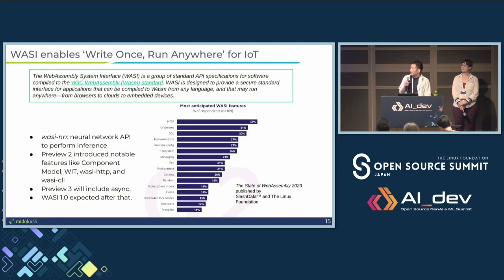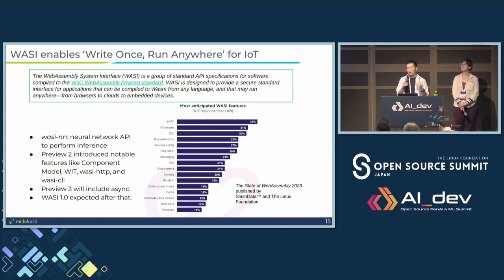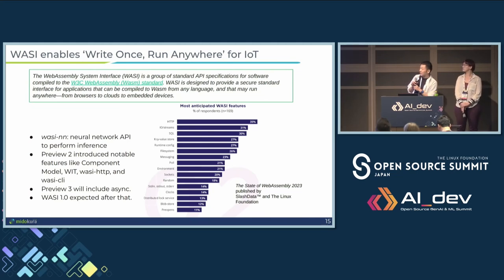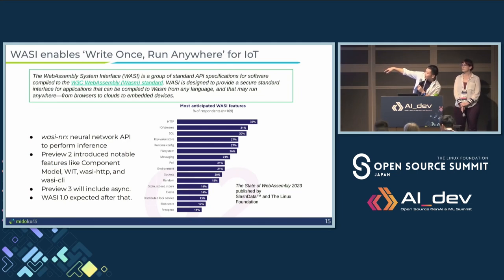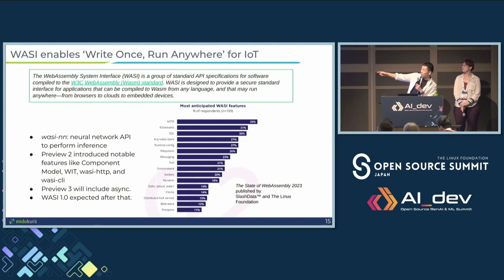There is a thing called WASI — WebAssembly System Interface — which is a set of standard interfaces for WebAssembly applications. It started off as a POSIX-like API for system clocks, files, and sockets, but now there are standard interfaces for things like WASI-NN, which is a neural network API for running inference, as well as HTTP, key-value store, and SQL — getting to quite high-level APIs. WASI-NN is particularly important for us because if you want to do edge AI, it's the standard API you need to invoke inference.